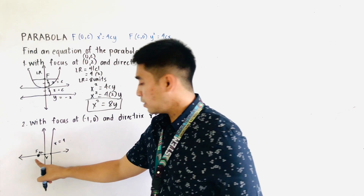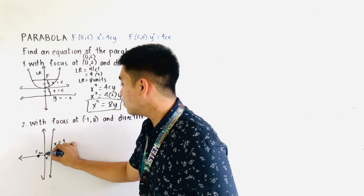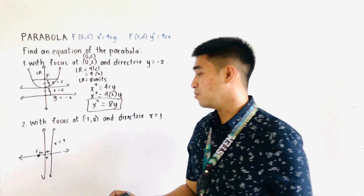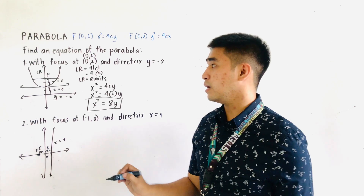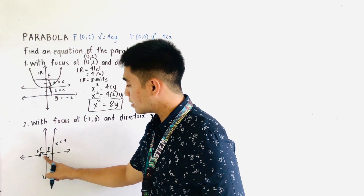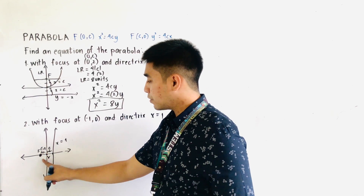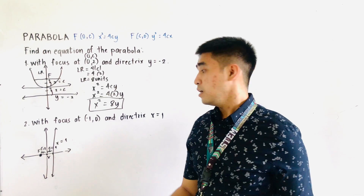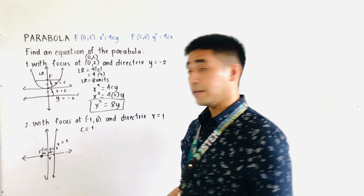The distance from the focus to the vertex is the value of c, and from the vertex to the directrix the value is also c. From the vertex going to the focus, that is just 1 unit. From the vertex going to the directrix, that is just 1 unit. Therefore, c = 1.